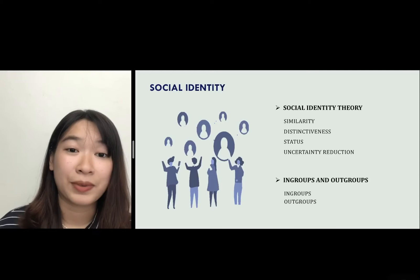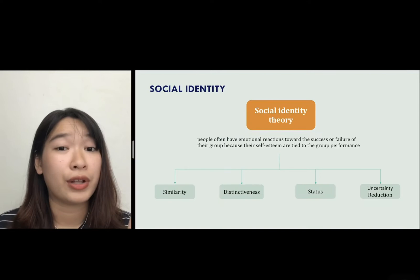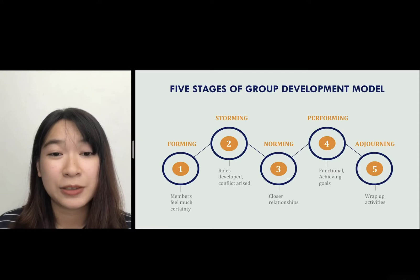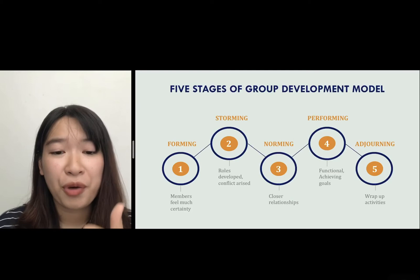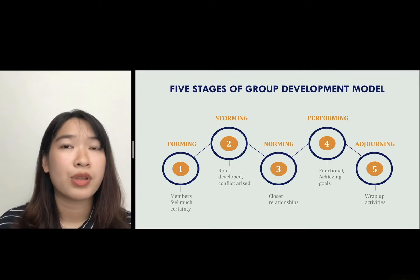Let's move on to the group development model. There are five stages: forming, storming, norming, performing, and adjourning. The first stage is forming — the stage when members feel the most uncertainty because they have to discuss a lot to pick out their roles and choose the group norms.